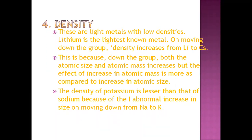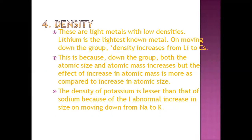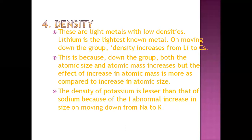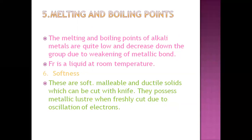Alkali metals are light metals with low density. Lithium is the lightest known metal. On moving down the group, density generally increases from lithium to cesium, because the effect of increasing atomic mass outweighs the increase in atomic size. However, potassium has a density lower than sodium due to an abnormal increase in atomic size moving from sodium to potassium — this is an exception to the trend.